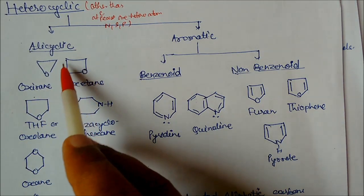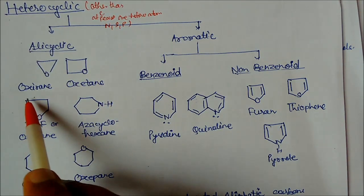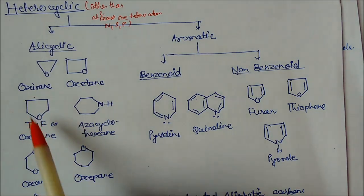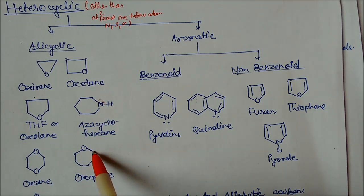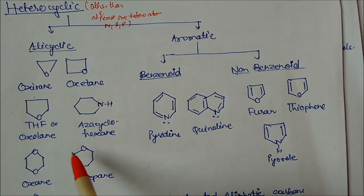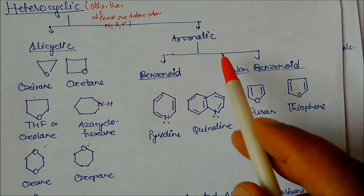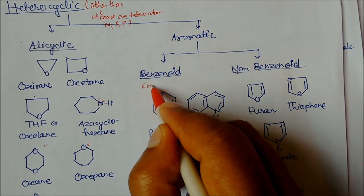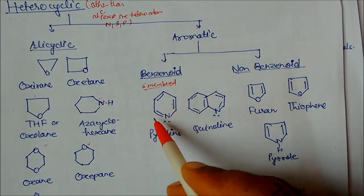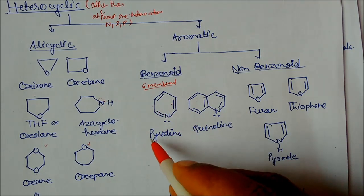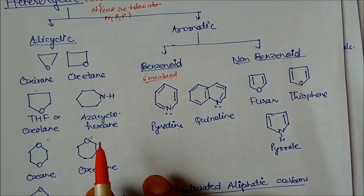For example, if you put one oxygen in a four-membered ring (three carbons and one oxygen), this is an oxetane. A five-membered ring with one oxygen is called THF (tetrahydrofuran or oxolane). A six-membered ring analogue is like cyclohexane but with one hetero atom. For aromatic heterocyclic benzenoids, an example is pyrimidine — a six-membered ring with one hetero atom.